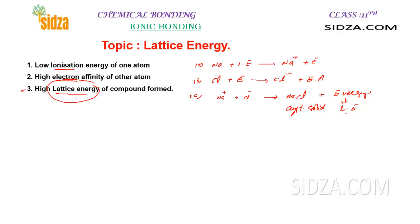Lattice energy determines the force of attraction between the ions in a crystalline solid. It tells us how strongly and tightly the ions are held together in the crystalline solid. Higher lattice energy means that the ions in the crystalline solid are tightly packed together and the force of attraction is very strong.